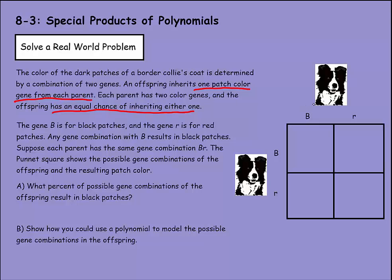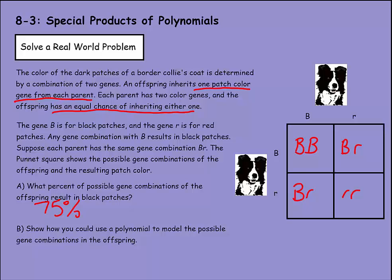In the Punnett square, each parent gives either a capital B or a small r with a 50% chance each. If both give capital B, black patches. If one gives B and the other r, still black patches because B is dominant. If one gives r and the other B, still black patches. Only if both give r do you get red patches — so 75%, or three out of four, would have black patches.